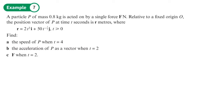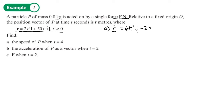A particle of mass 0.8 kg is acted on by a single force F. Relative to a fixed origin O, the position vector of P at time t seconds is given. T is always positive. Part A: find the speed of P when t = 4. To find the speed we first need the velocity vector, so we differentiate the i part to get 6t²i, and the j part gives −25t^(−3/2)j.